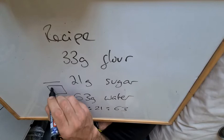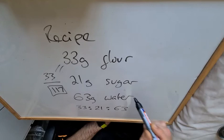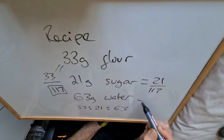Good. And then if we wanted to know the fraction that are flour, it'll be 33 over 117. If we want to know sugar, it's 21 over 117. And then water is 63 over 117.